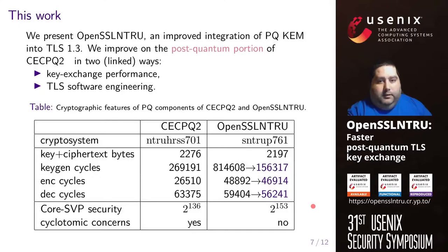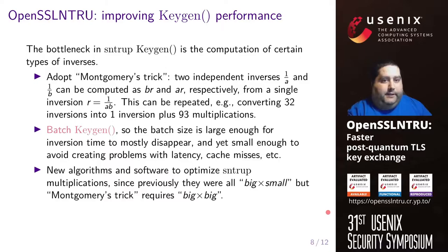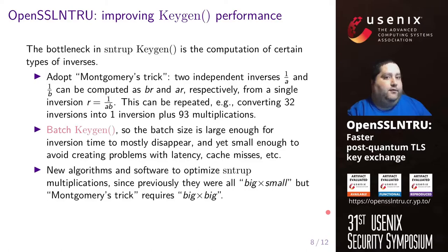So how did we manage to improve keygen performance? The fundamental consideration here is that the bottleneck in SNTRUP keygen is the computation of certain types of inverses. The idea is to adopt Montgomery's trick, which is based on the fact that two independent inverses — one over A and one over B — can be computed as B times R and A times R, respectively, from a single inversion R. This can be repeated, for example, converting 32 inversions into a single inversion plus 93 multiplications. We adopt this trick by implementing a batch keygen operation. This must be designed so that the batch size is large enough for inversion time to mostly disappear, and yet small enough to avoid creating problems with latency and cache misses. We also had to design and develop new algorithms and software to optimize the SNTRUP multiplications, since previously the multiplications were mostly big factor times small factor, but Montgomery's trick requires optimizing for big factor times big factor multiplication.